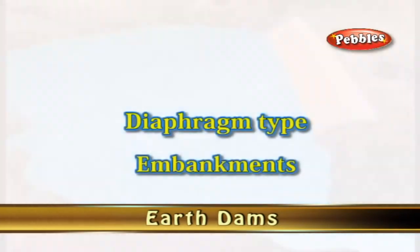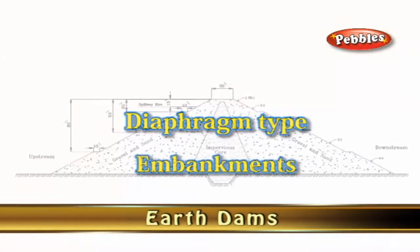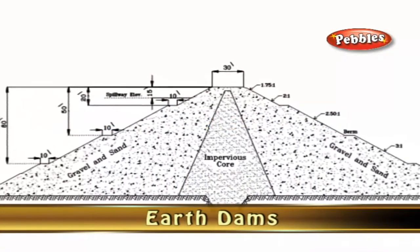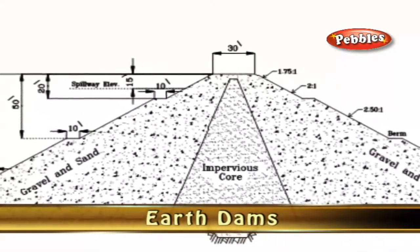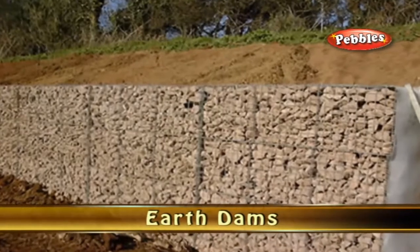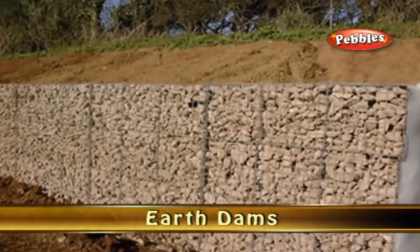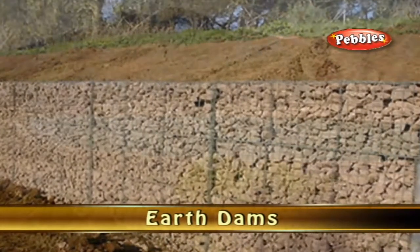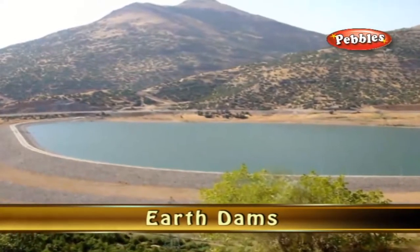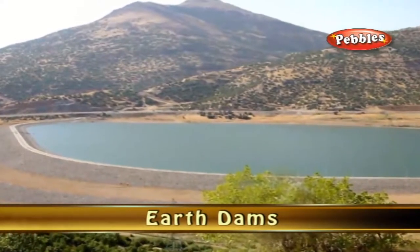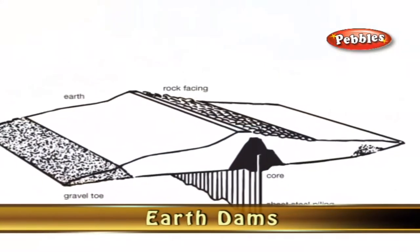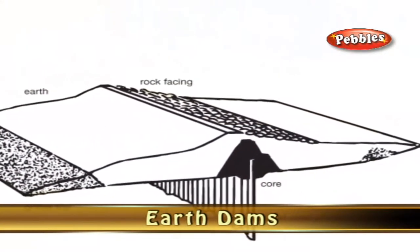Diaphragm Type Embankments: These have a thin impervious core surrounded by earth. The thin core is called the diaphragm and is usually made of impervious soils, concrete, steel, or timber. The diaphragm must be tied to the bedrock or to a very impervious foundation material.